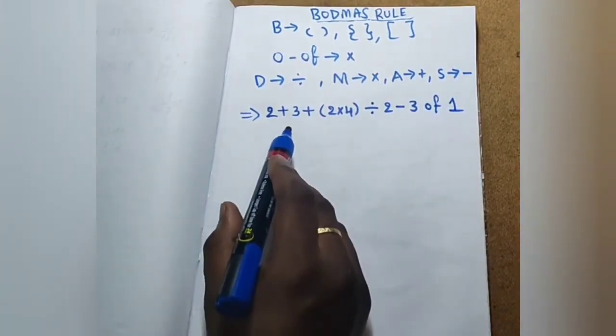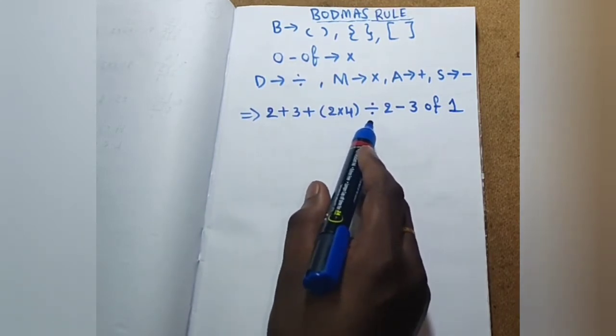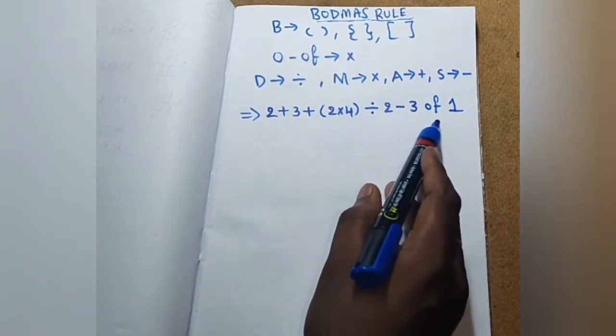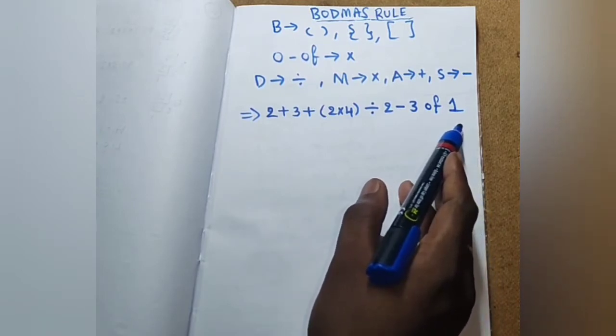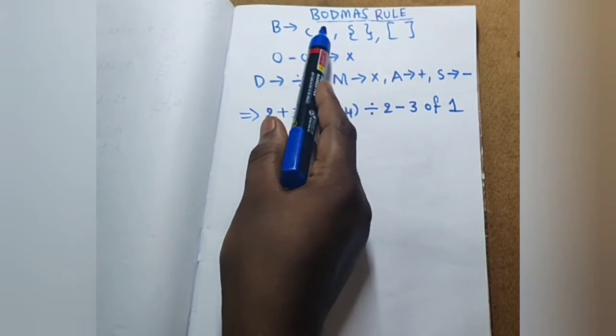Today our problem is 2 plus 3 plus in the open brackets 2 into 4 divided by 2 minus 3 of 1. First preference is brackets. BODMAS rule. Brackets save one.